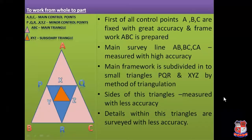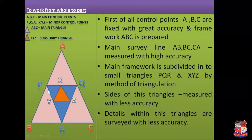Now let us see the figure to understand the first principle — to work from whole to part. In the figure, capital A, B, and C are the main control stations, and P, Q, R and X, Y, Z are the minor control stations. Triangle ABC is the main triangle, and triangles PQR and XYZ are the subsidiary triangles. First, the control points A, B, and C are fixed with great accuracy, and the framework ABC is prepared. The main survey lines AB, BC, and CA are measured with high accuracy.